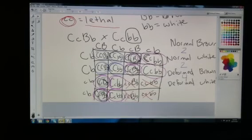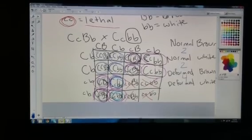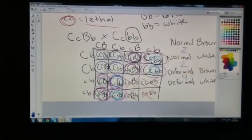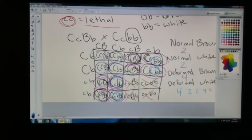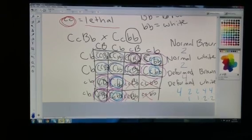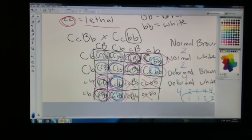For how many have white fur, out of those we have one, two, three, and four. So my ratio then, my overall ratio would be two to two to four to four. And I can reduce that down to one to one to two to two. So that is my overall answer.